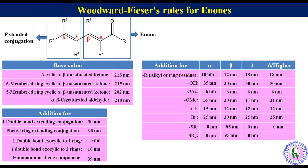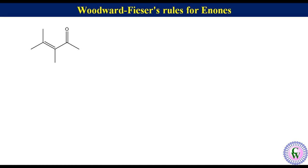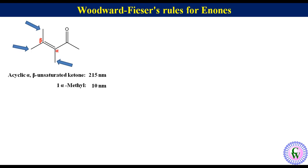Now let's take the example of 3,4-dimethylpent-3-en-one. This is the alpha carbon and this is beta. This is an acyclic alpha-beta unsaturated ketone, so the base value is 215 nm. There is one methyl group at the alpha position, adding 10 nm. There are two methyl groups at the beta position, adding 2 × 12 = 24 nm. So lambda max = 215 + 10 + 24 = 249 nm.